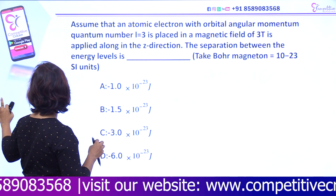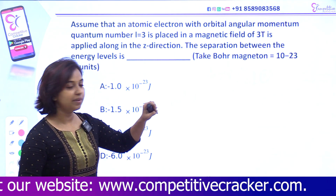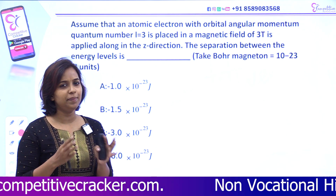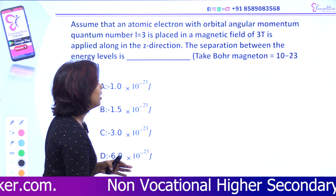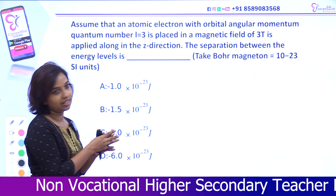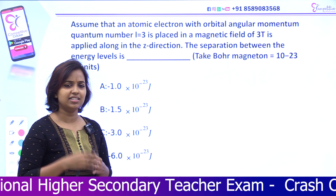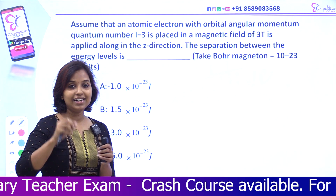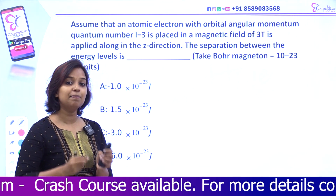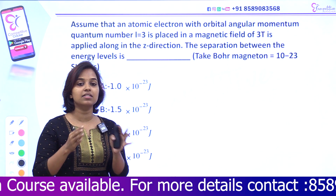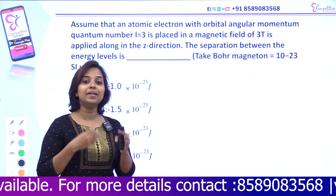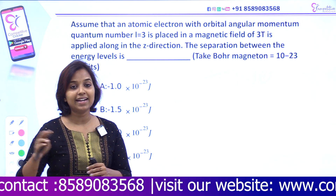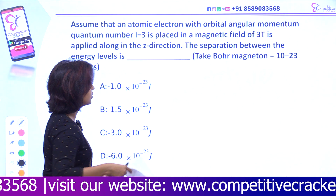Okay, so let's do this problem. Here we are going to discuss the atomic electron. We are going to place a particular magnetic field along the z direction. The direction is not that much important. We are going to discuss the splitting of spectral lines — when it is present, or when it is placed in a magnetic field, this is called the Zeeman effect.